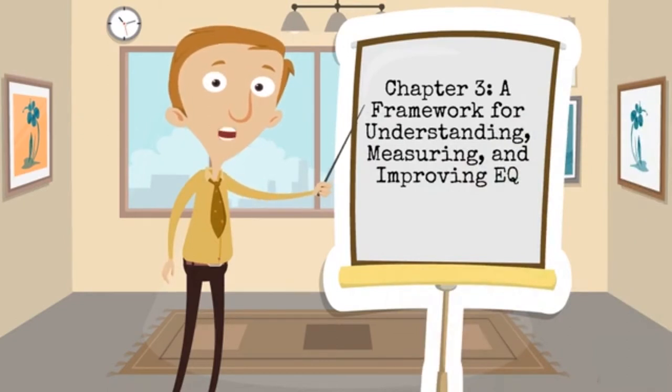People high in self-awareness understand what they do well, what motivates and satisfies them, and which people and situations push their buttons. This is the foundational emotional intelligence skill. The next component of EQ builds upon self-management. Self-management is your ability to use your awareness of your emotions to stay flexible and direct your behavior positively. This involves your ability to put your immediate needs aside to focus on long-term goals. Social awareness is the ability to recognize emotions in other people and understand what is really happening in a situation. Someone who is high in social awareness has a perspective much like an anthropologist's, objectively observing and understanding human behavior. The final and most complex part of EQ is relationship management, using your awareness of emotions to successfully manage your interactions.